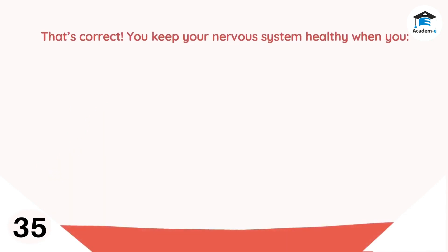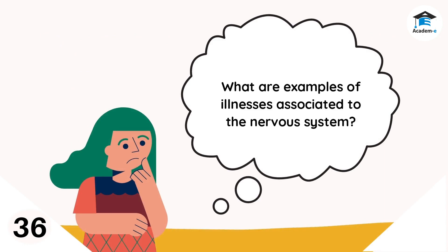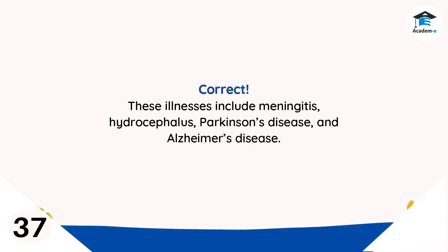How do you take care of your nervous system? You keep your nervous system healthy when you: one, eat healthy food rich in calcium, potassium, fats, and B vitamins such as fruits, vegetables, fish, and nuts; two, have enough sleep or rest; three, do physical exercise or activities regularly; four, engage in brain-stimulating activities such as puzzles, games, reading, and listening to instrumental music; five, observe good hygiene practices when handling food and drinks; six, strictly follow safety precautions that protect your head, neck, or back from injuries. Examples of illnesses associated with the nervous system include meningitis, hydrocephalus, Parkinson's disease, and Alzheimer's disease.